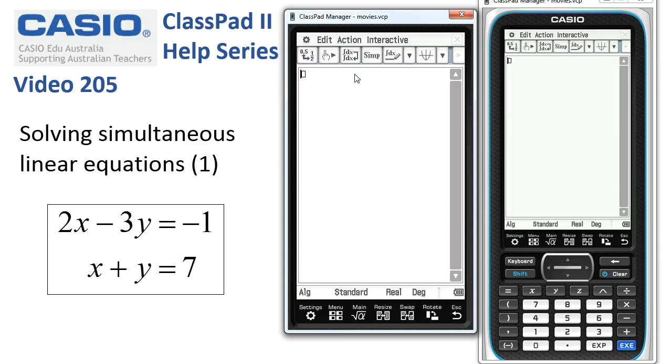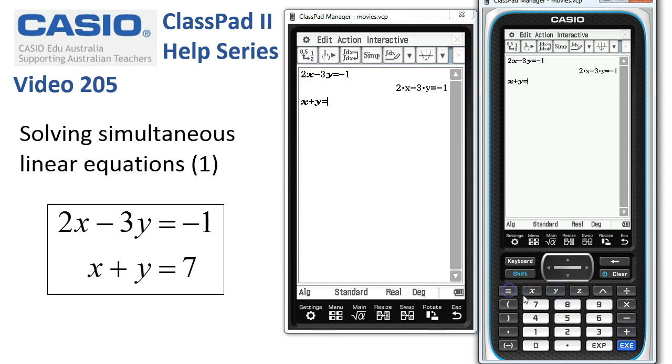We'll start in main and type in the first equation: 2x - 3y = -1. I'm going to tap execute, then tap in the second equation: x + y = 7, and tap execute.